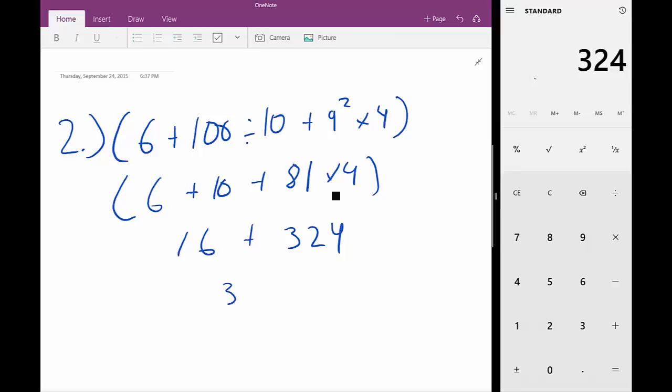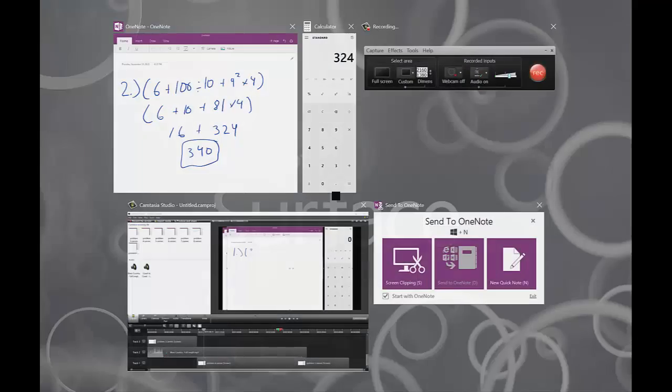Adding those two numbers together you get 340. Looking at our answer bank, there is one of those in our answers so we're going to circle that, say that's our final answer.